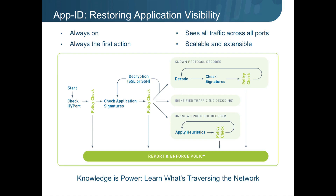For comparison's sake, traditional stateful inspection firewalls use only one mechanism to identify traffic, and that's port. Port 80 equals HTTP is the only mechanism that a stateful inspection firewall will use, and that, in today's advanced world of applications, is inefficient.